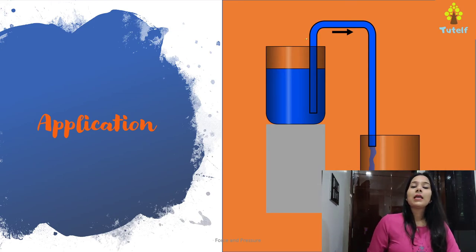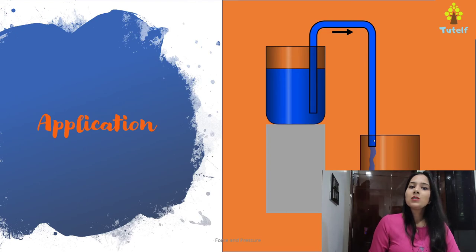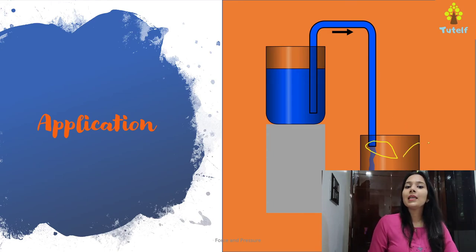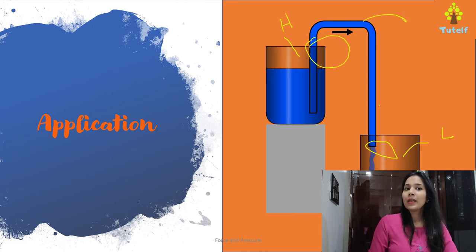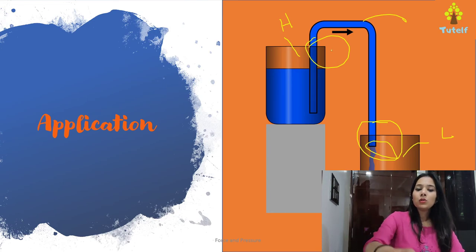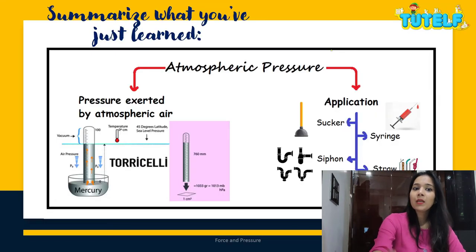Next is a siphon. As soon as you pull the water from here, this area has low pressure and the other side has high pressure. The siphon pulls the water from the high atmospheric pressure area to the area of low atmospheric pressure, because there are fewer particles here and more there. These are the four applications of atmospheric pressure.